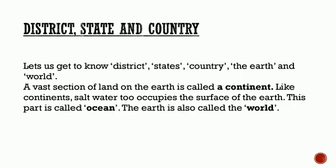District, state and country. India is my country. We have been reading this sentence in our pledge since Standard 1. In your textbook, you will find the words earth, world, country, state, district, taluka and village. A vast section of land on the earth is called a continent. Like continents, salt water also occupies the surface of the earth. This part is called an ocean. The earth is also called the world.